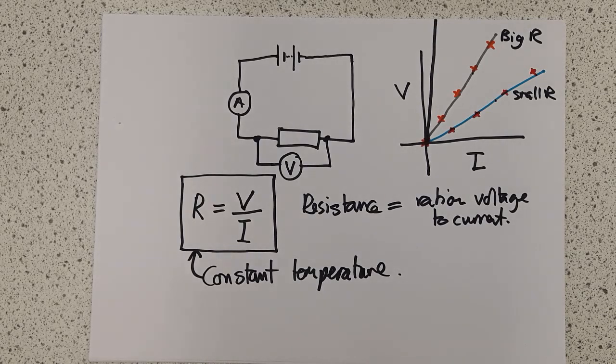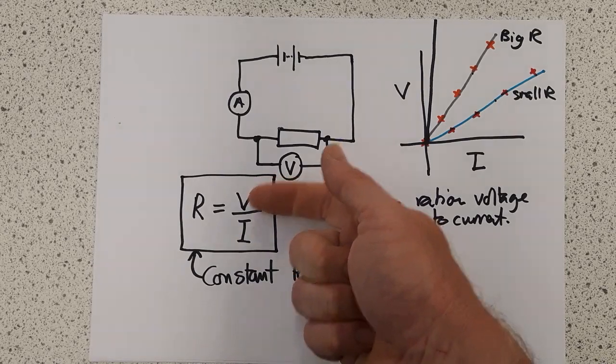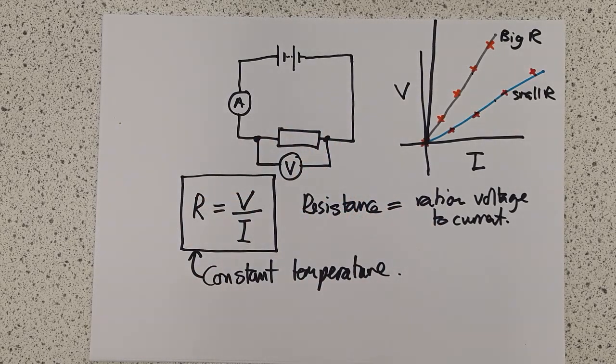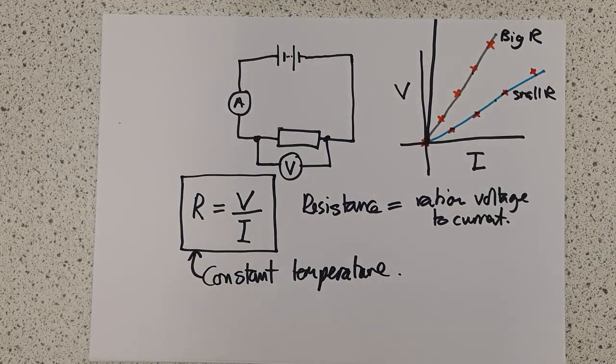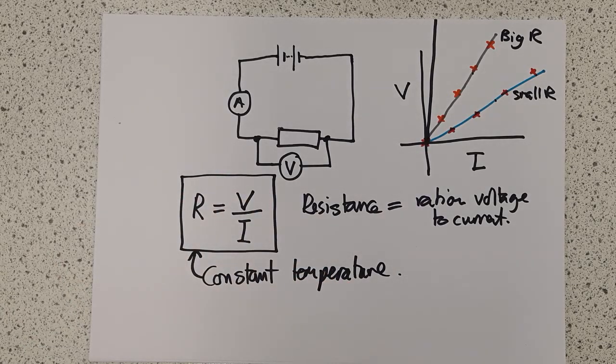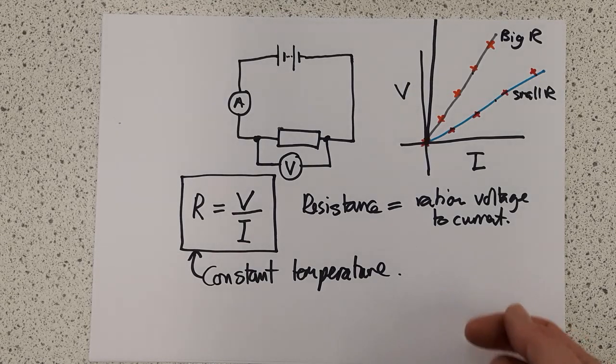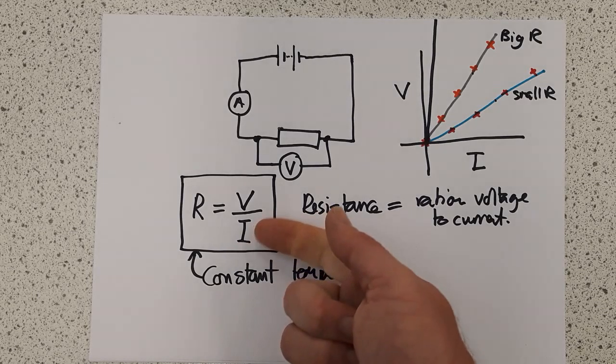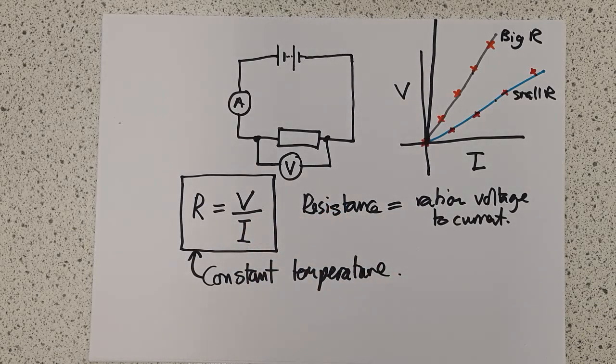And it really is a case of, as always, they'll give you two things and ask you to find the third. On the higher paper, they're more likely to ask you to rearrange this equation. That's a separate issue. But just remember the idea that if you're confused, look for the numbers they give you and try and work out which formula to use. But this is something that will always come up as a calculation. We'll look at practice calculations later.